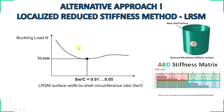Instead of using a point load to induce a large buckle on the shell surface, we directly deleted the membrane stiffness components of the surface. We defined the material using the ABD stiffness matrix — the A (membrane), B (coupling), and D (plate) stiffnesses — and deleted the membrane stiffness in a specific area, then increased the surface width (the radius). This gives a similar diagram from which we determine our minimum design load.